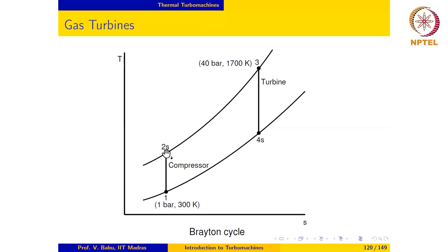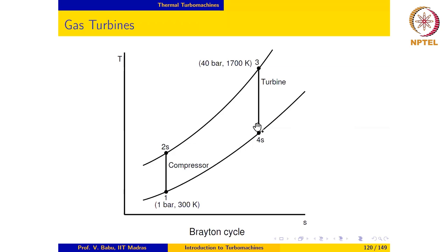Hydrocarbon fuel is mixed with the air and burnt, which increases the temperature of the gases. The high-temperature gases then enter a turbine where they are expanded. The turbine produces sufficient power to run the compressor, and the leftover power is used to run an electric generator in a land-based gas turbine power generation unit. In the case of an aircraft engine, the leftover enthalpy of the gases is converted into kinetic energy in a propulsion nozzle for propulsion.